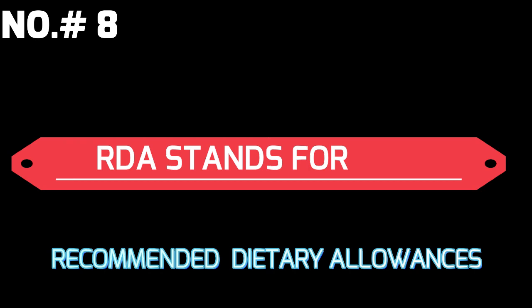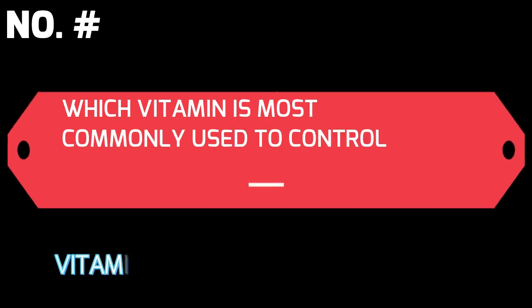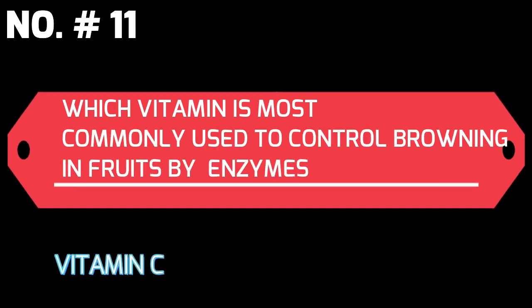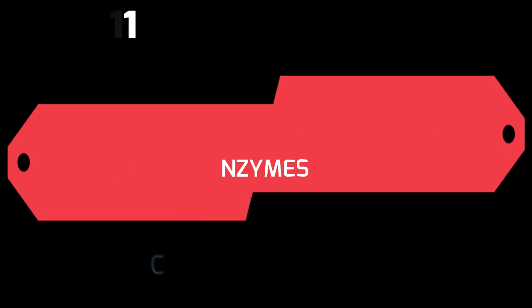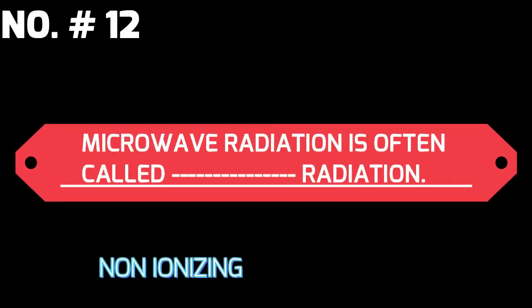RDA stands for Recommended Dietary Allowances. The first RDA was published by the National Nutrition Program. Which vitamin is most commonly used to control browning in fruits by enzymes? Answer: Vitamin C.